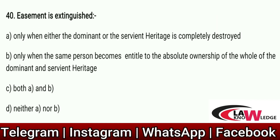Q40: Easement is extinguished — Option A: Only when either the dominant or the servient heritage is completely destroyed. Option B: Only when the same person becomes entitled to the absolute ownership of the whole of the dominant and servient heritage. Option C: Both A and B. Option D: Neither A nor B. Correct answer is C. Easement is extinguished under either of these two conditions.